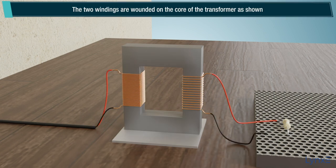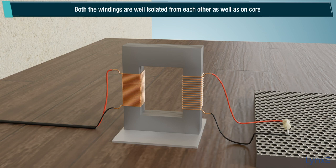The two windings are wounded on the core of the transformer as shown. Both the windings are well isolated from each other as well as on core. Every transformer has two terminals.